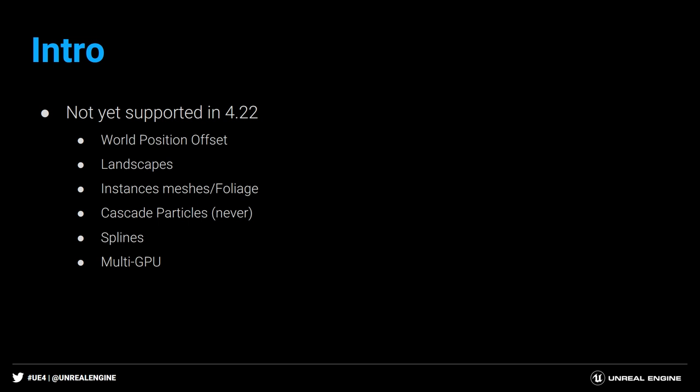What we don't support is world position offset — so if you have foliage or grass moving in the wind, ray tracing reflections won't show that movement. Landscapes aren't yet supported; that's coming in 4.23 most likely. Instanced meshes and foliage are also not yet supported — you can use them, but they won't appear in reflections and no ray-traced shadows will be cast from them.